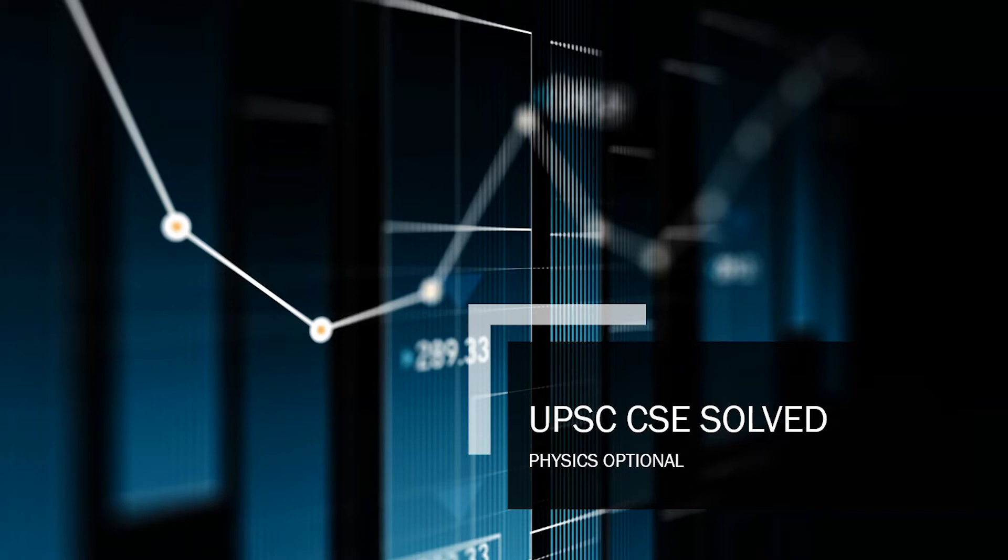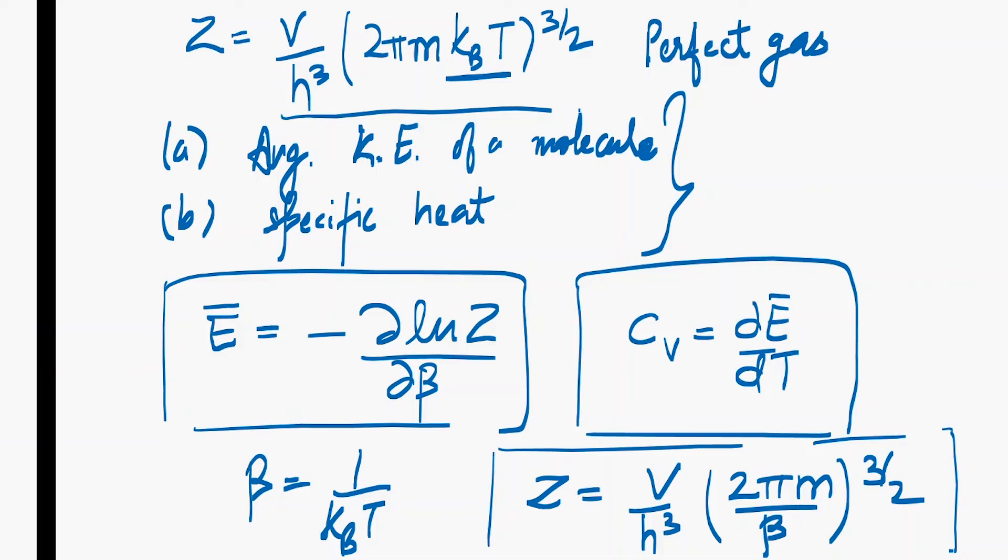There are two parts to this question. First, you have to find out the average kinetic energy per molecule, for one molecule, and then specific heat in the second part.